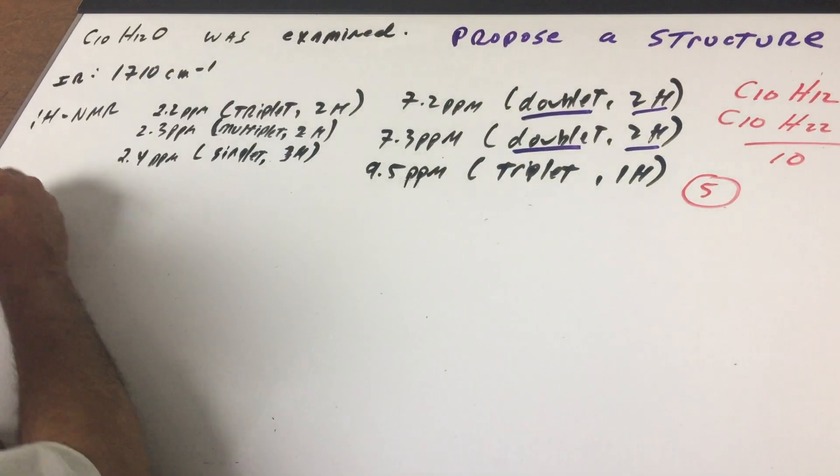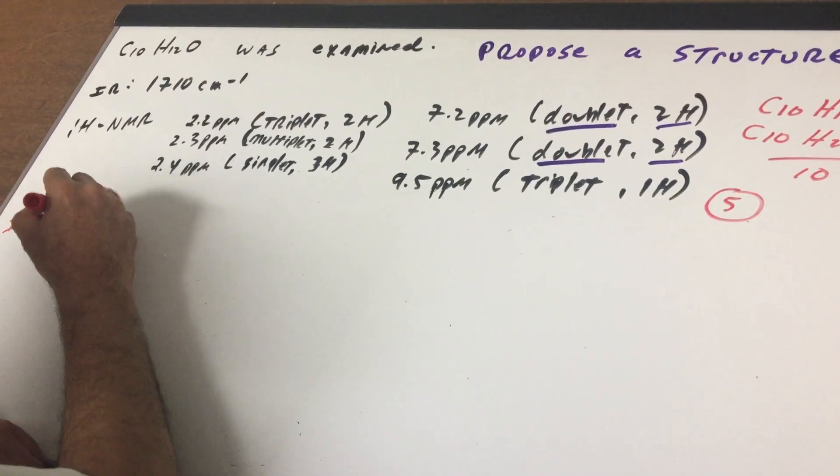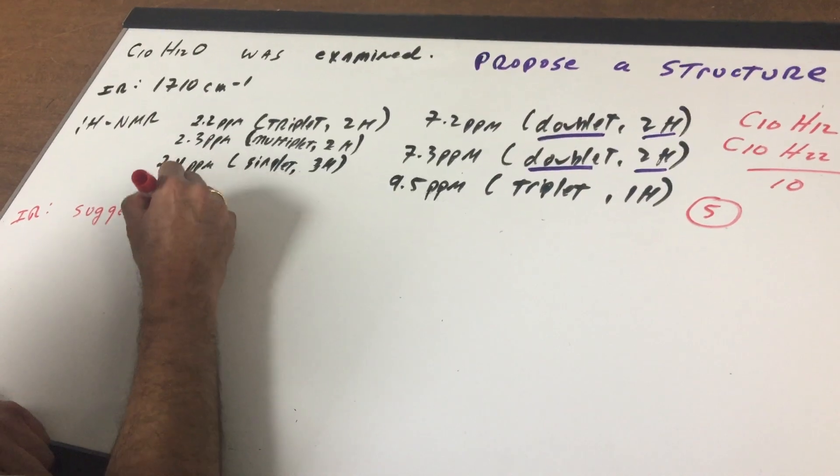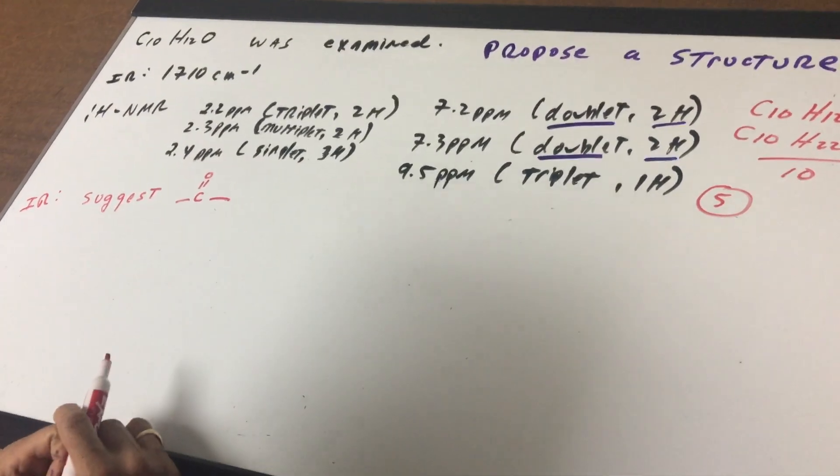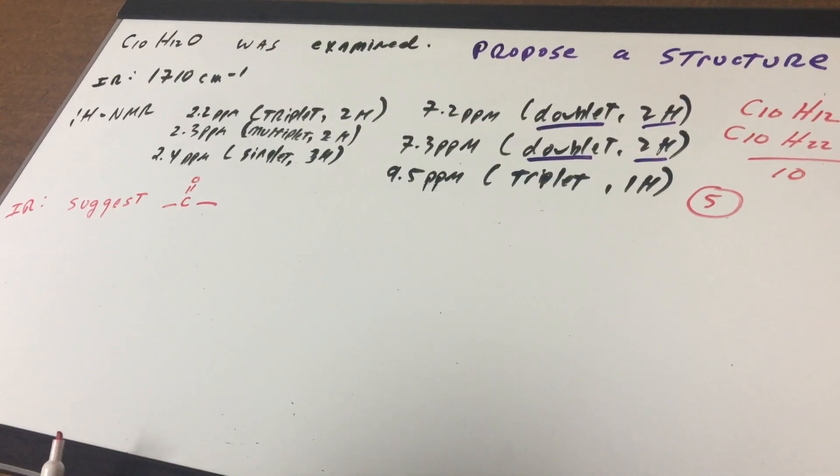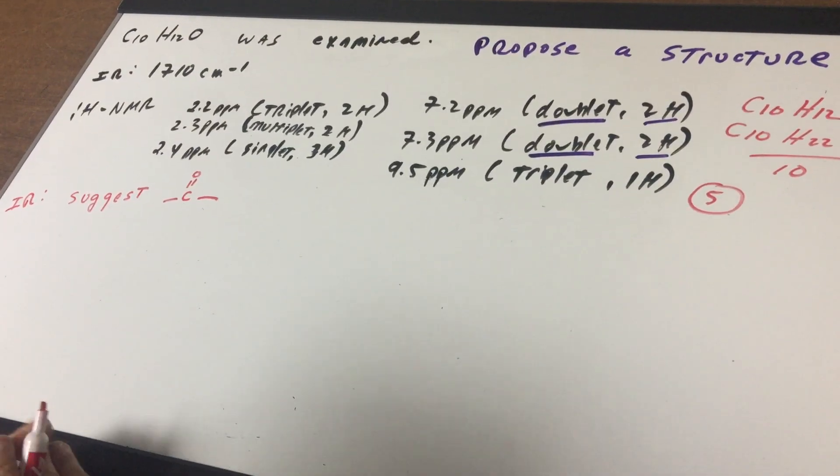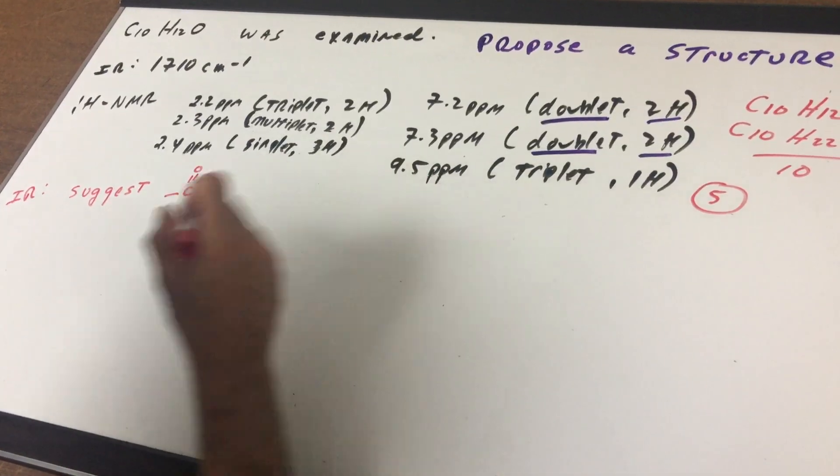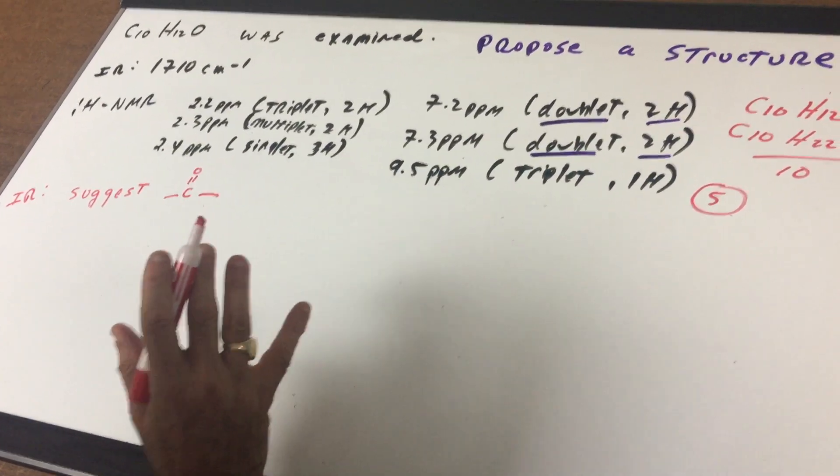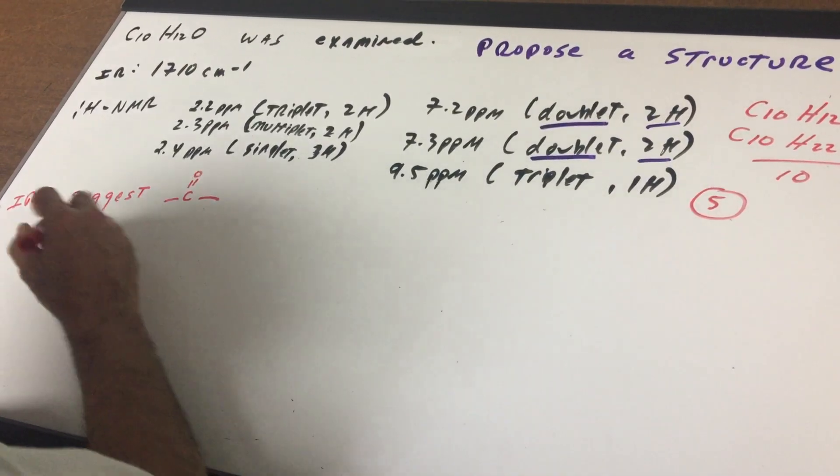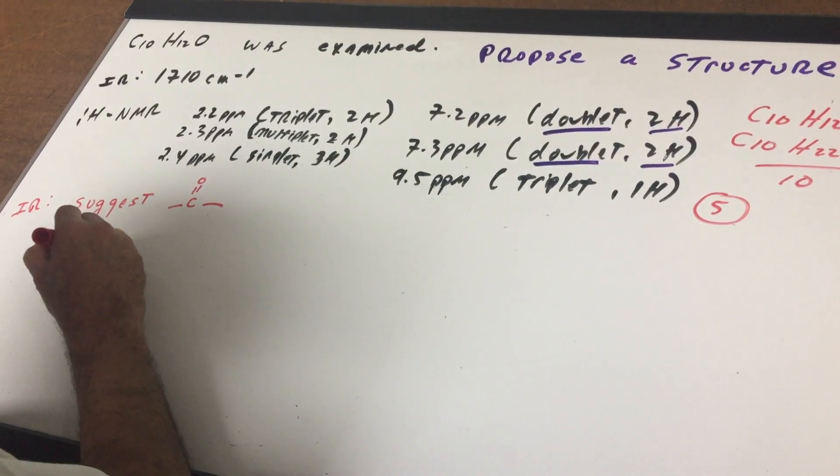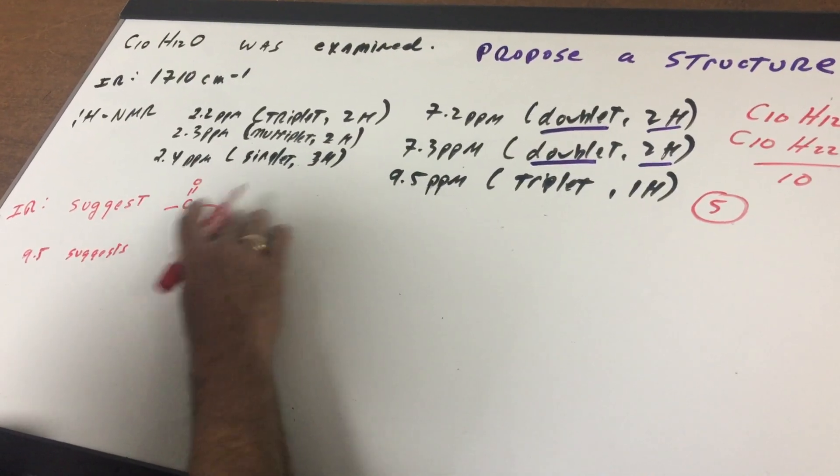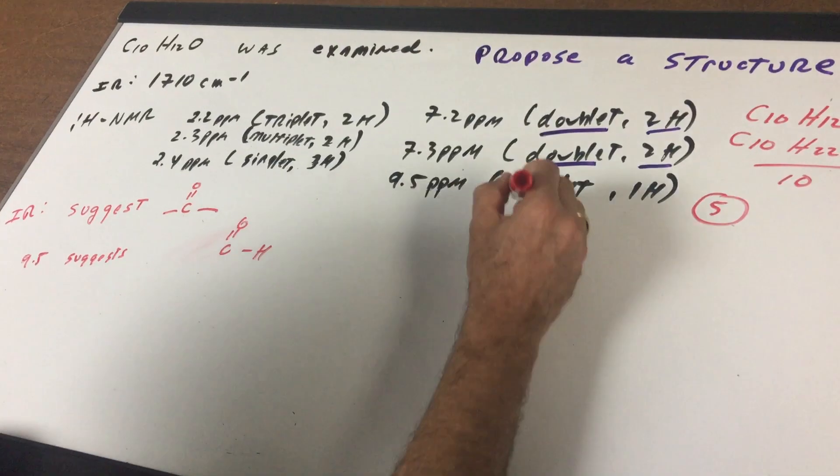Now let's go over the data. The IR first of all is 1710 and that means it would suggest the presence of a carbonyl group. So we know I would think pretty much for sure that there's a carbonyl group here based on the 1710 number. Now we go to the NMR data. Now the first thing that catches my eye is this 9.5. 9.5 is a number for an aldehyde group and that's very important because 9.5 suggests an aldehyde group.